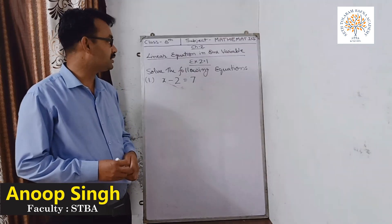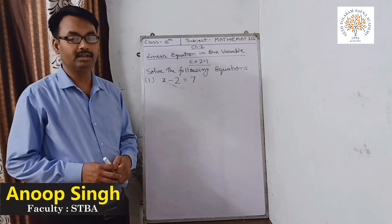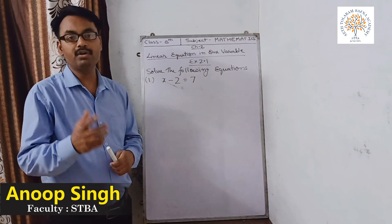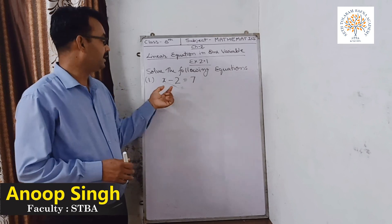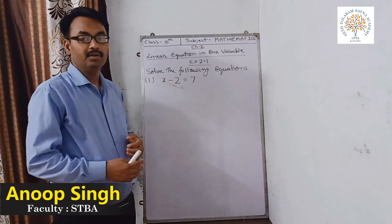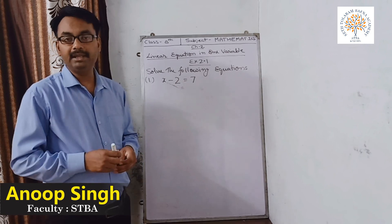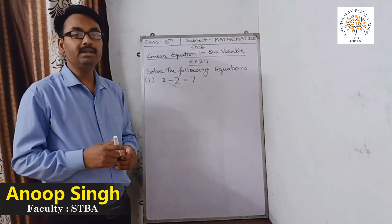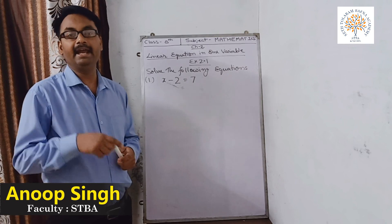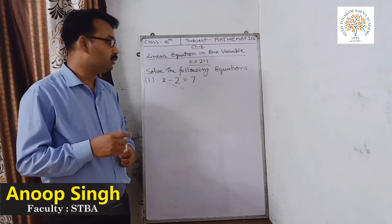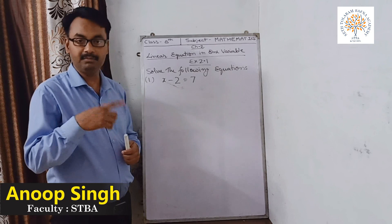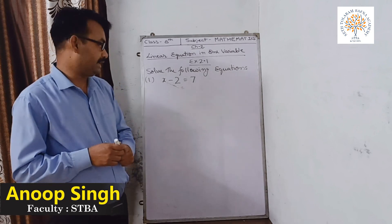Now we will discuss some questions of exercise 2.1. The first question is: solve X minus 2 equals 7. How can we solve this equation? We put the variable on the left-hand side and the other digits on the right-hand side. We are doing two methods: cross multiplication and transposition. In cross multiplication, we deal with digits in division or multiplication. In transposition, we deal with digits in positive or negative sign. When we do transposition, the sign will be changed, but not in cross multiplication.